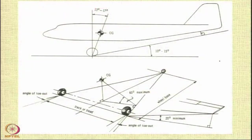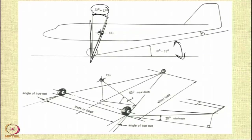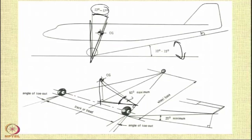Looking at the tail wheel type layout, the main gear is mounted slightly ahead of the center of gravity. The angle of 13 to 17 degrees ensures that the approach angle during landing does not lead to the tail hitting the ground. Similarly, the overturn angle in the side view is to be maintained at around 60 degrees maximum — if it exceeds 60 degrees, tipping can occur. Thanks for your attention; we will now move to the next section.